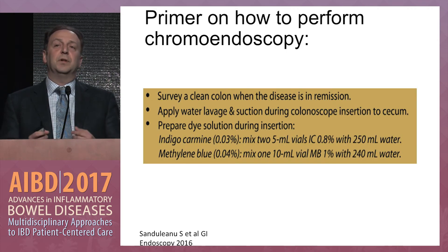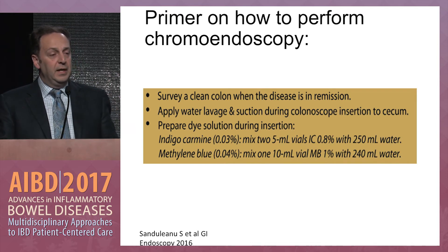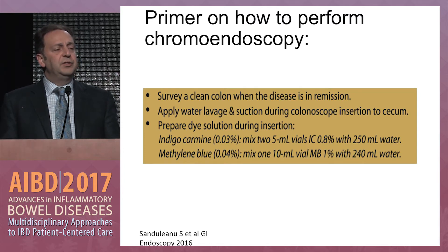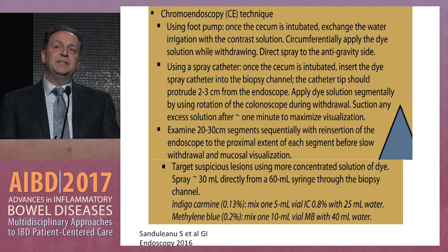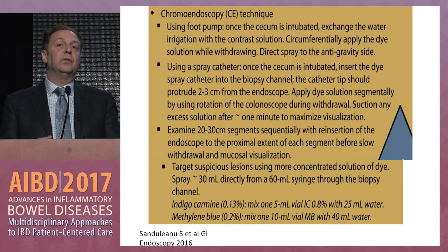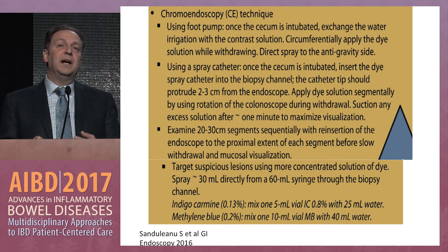Whether you think chromoendoscopy works great depends on picking the right patient — doing it more in patients where you think polyps will be found. A nice review paper covers how to perform chromoendoscopy: you need a clean colon, apply water irrigation, and use the concentrations of indigo carmine or methylene blue. The technique involves going in with white light, pulling back while applying dye spray, then cleaning up and doing another look. Some operators use the pump from the beginning to be more efficient.